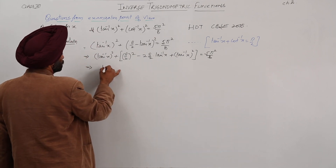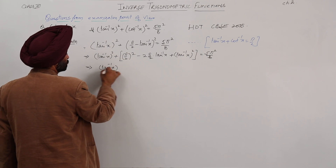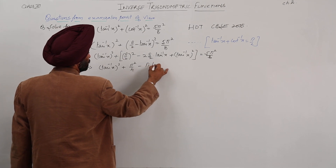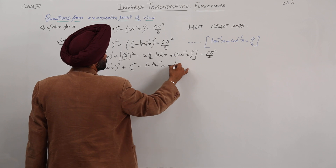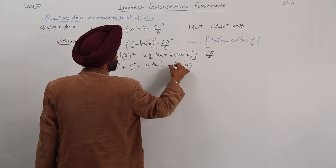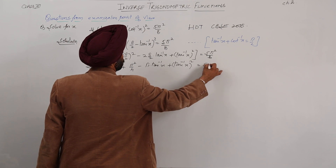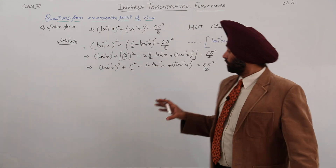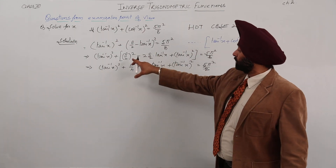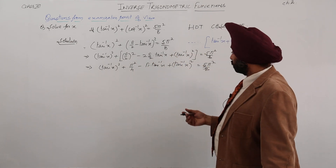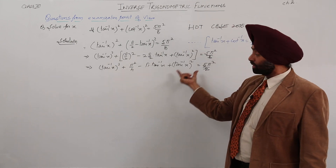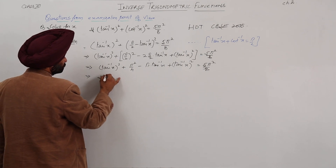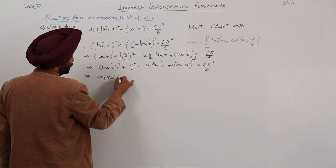Now let's use the identity a minus b whole square. So we are getting: tan inverse x whole square plus pi square by 4 minus pi times tan inverse x plus tan inverse x whole square, equal to 5 pi square by 8. I have used the identity a minus b whole square equals a square minus 2ab plus b square. Now the like terms are the two tan inverse x whole square terms.